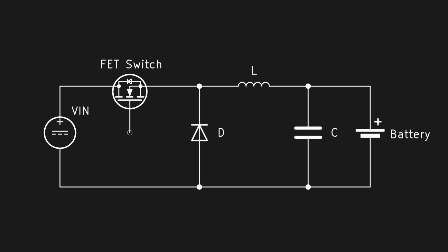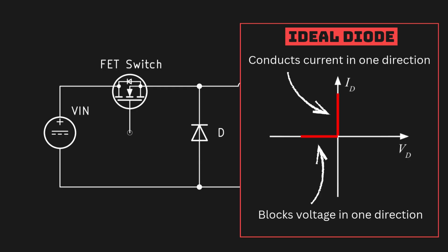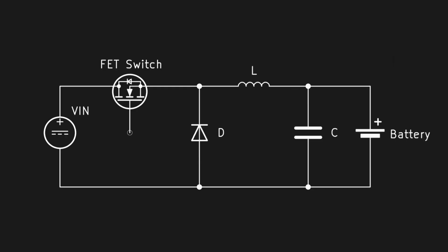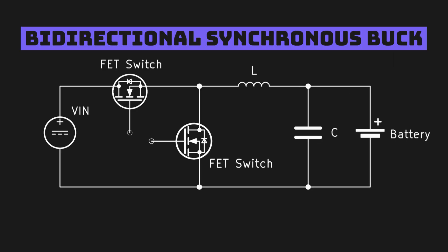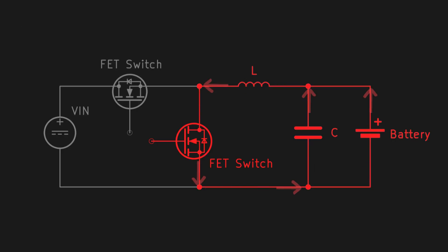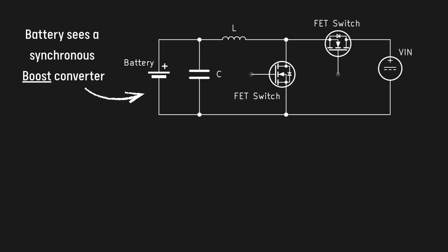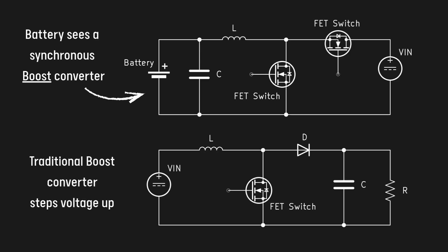In a traditional buck, this is not possible, as the diode can only conduct current in one direction. But if you exchange this diode with another MOSFET, you get a bidirectional synchronous buck. This happens because you can now drive the new MOSFET to store energy from the output on the inductor and then deliver it to the input. From the load's perspective, it works like a synchronous boost converter, which does exactly the opposite of a buck.